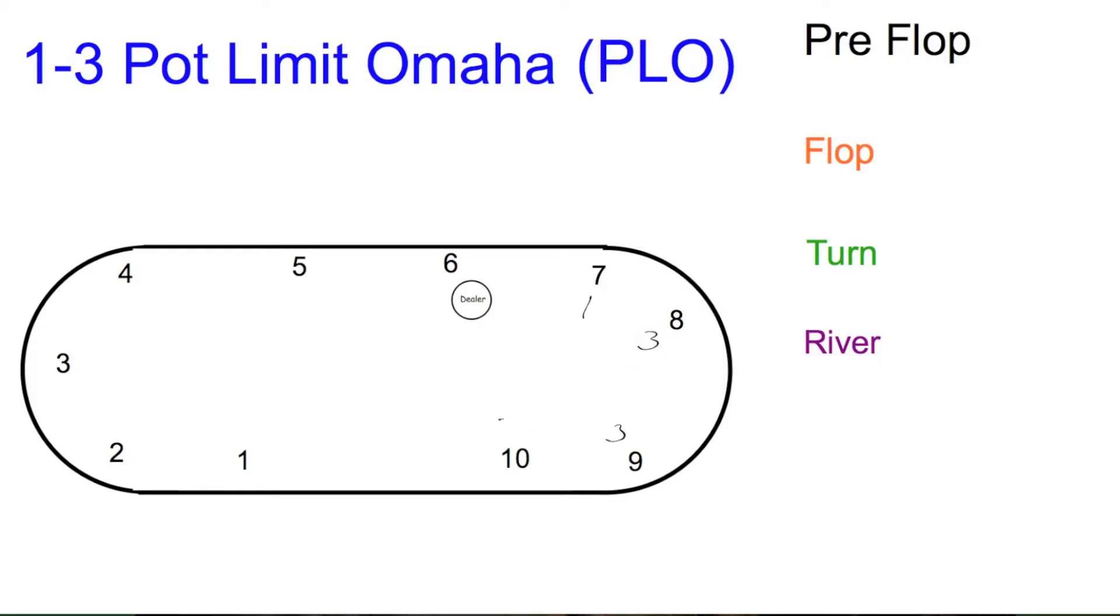Seat 9 is going to call. Seat 10 is going to call. Seat 1 wants to bet the pot. Now, what can they bet? Well, that's going to be 3 times 3 times 4 times 5 times 6. In this case, they can pot bet 18.